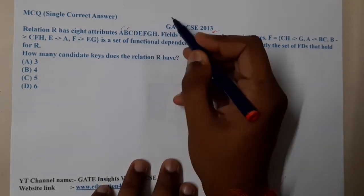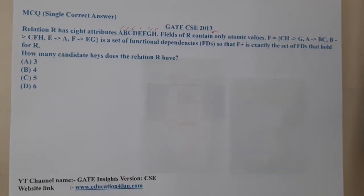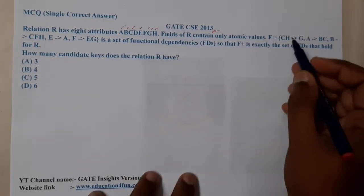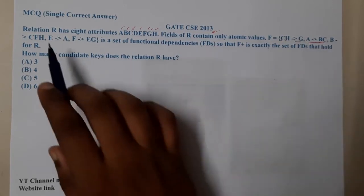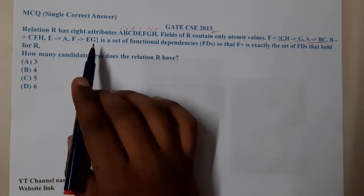Eight attributes A, B, C, D, E, F, G, H. Field of R contains only atomic values. CH implies AG, A implies BC, B implies CFH, E implies A, F implies E, G.